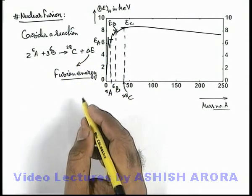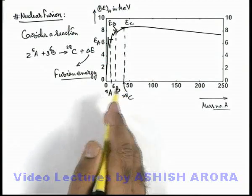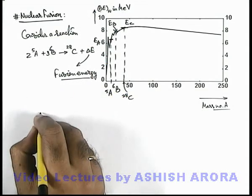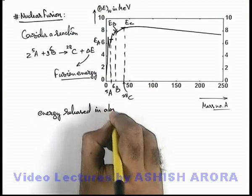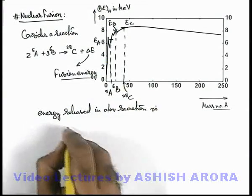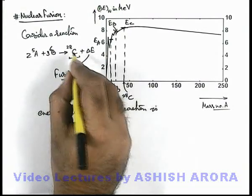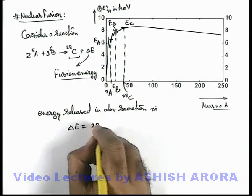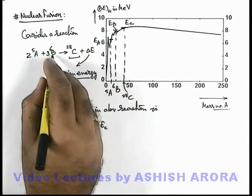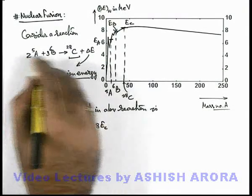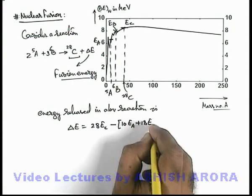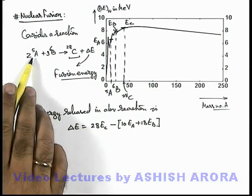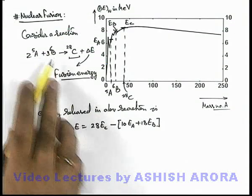And this can be easily calculated by the same method we have done in case of calculation of fission energy. So here we can directly write the energy released in our reaction is: this can be directly given as ΔE is equal to amount of energy which is released in formation of nucleus C, which will be 28 EC. But some energy is used in splitting up these nuclei A and B, so we need to subtract it. That will be 10 EA plus 18 EB, because 10 nucleons will be produced when 10 EA energy will be supplied to A, and 18 nucleons will be produced when 18 EB energy is supplied to B. So this is the total Q value of the reaction.